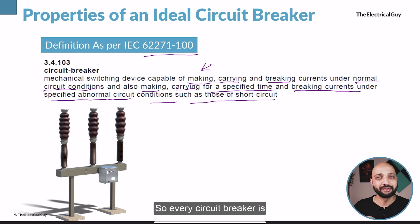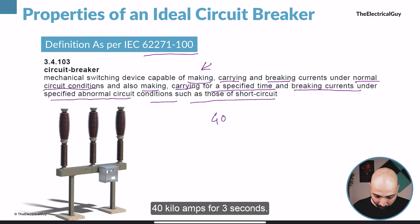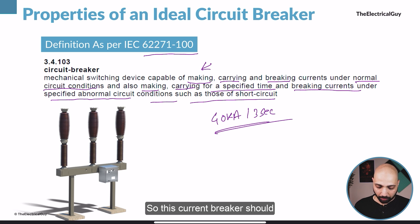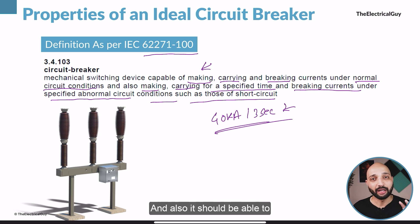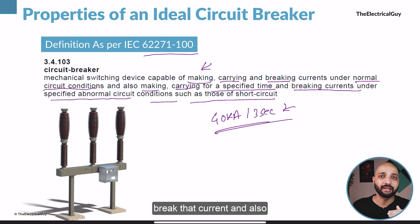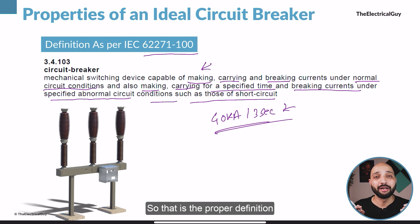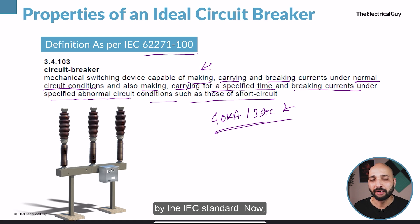Every circuit breaker is rated with some short circuit capacity — for example, 40 kilo amps for 3 seconds. The circuit breaker should be able to carry that current for the specified time of 3 seconds, and it should also be able to break and make that current. That is the proper definition of a circuit breaker as given by the IEC standard.